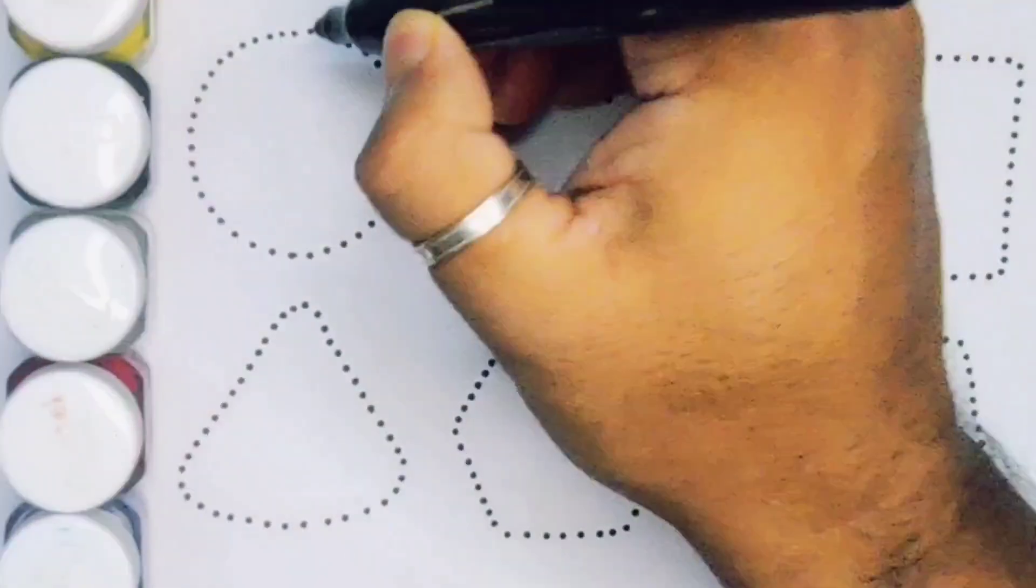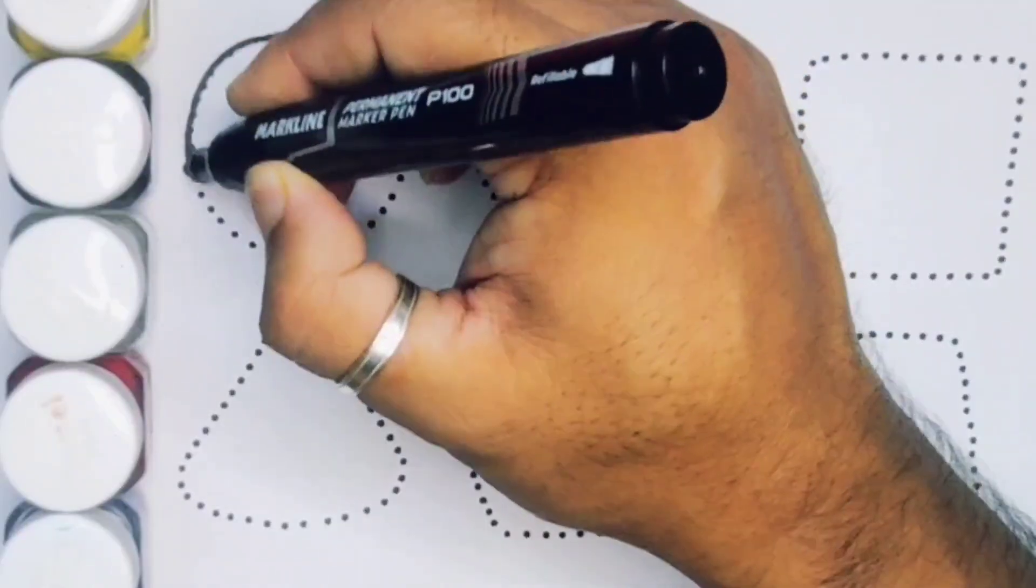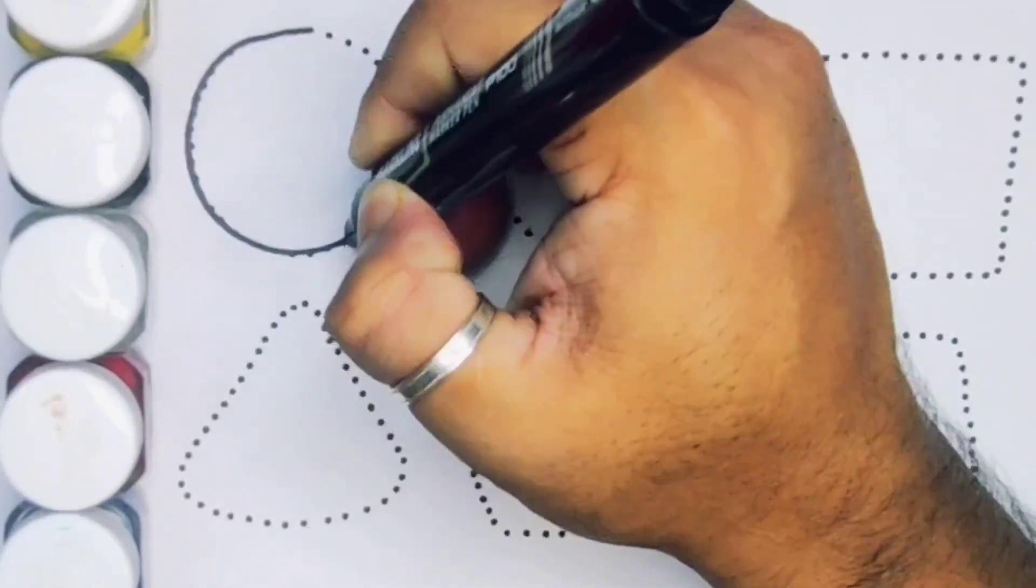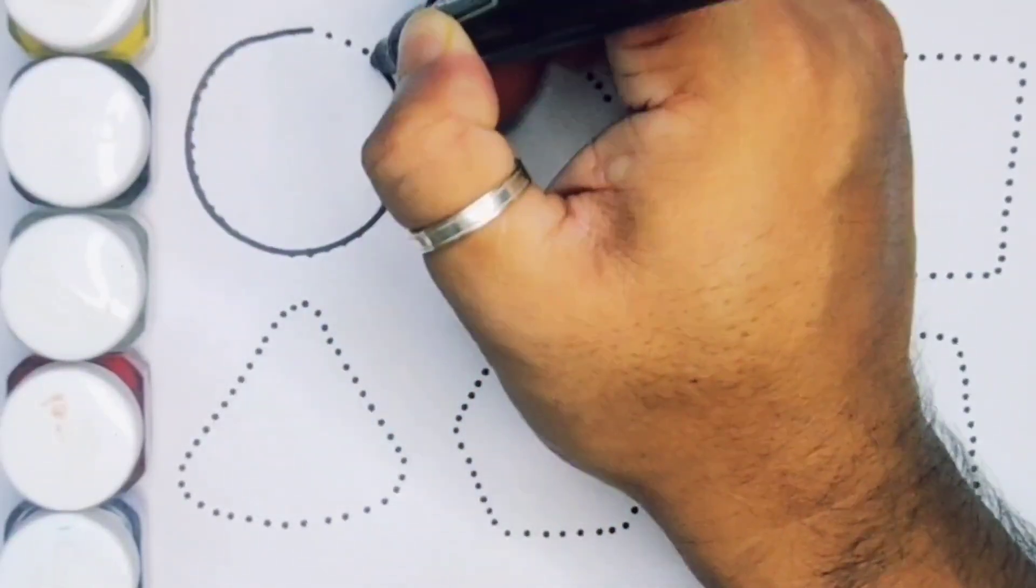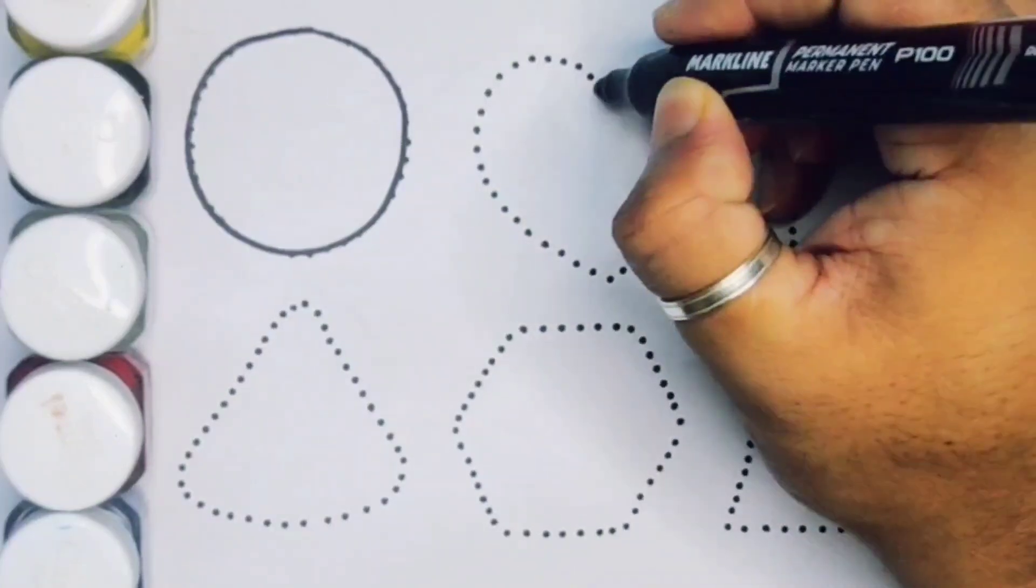First we're going to draw the shapes. Circle. Next, heart.